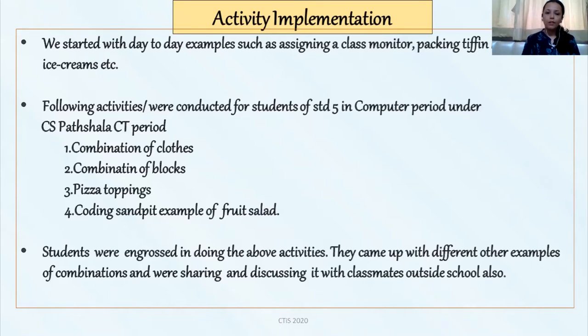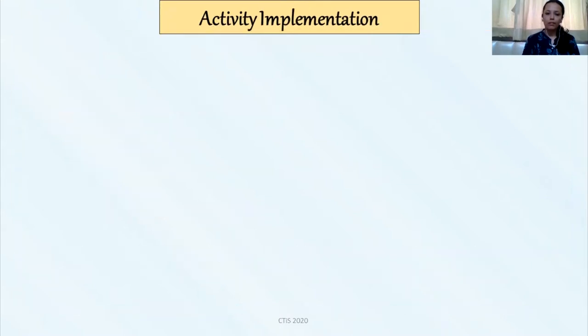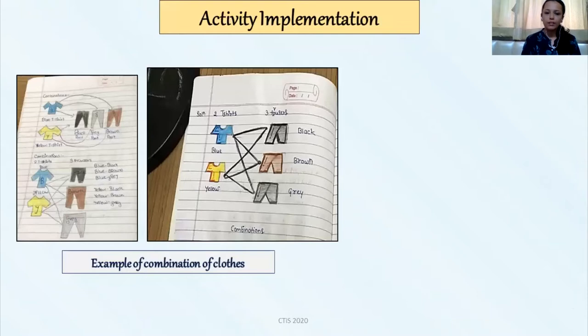Now let me tell you how the activities were actually implemented. In this particular example, which was given in CS Pathshala curriculum, it stated about how a student is going to dress up when he has two shirts and three trousers. The students drew a neat diagram showing different types of possible combinations and they came up with the answer 6, which was correct.